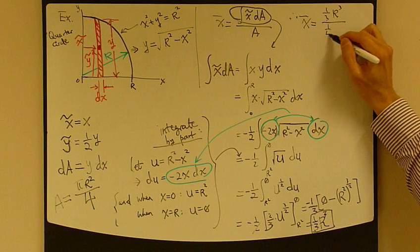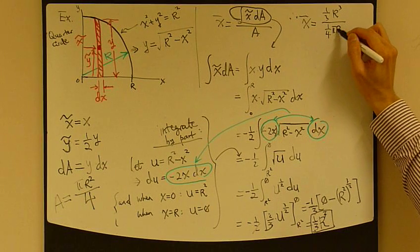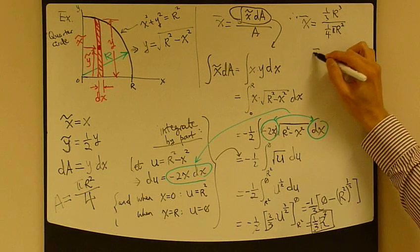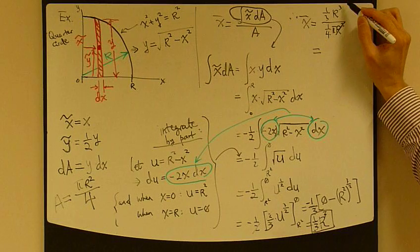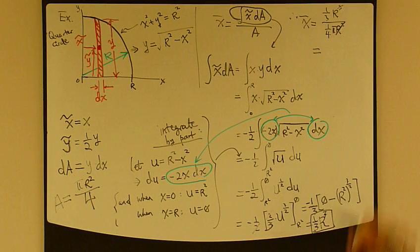So, square, okay, so look at this. The r squared disappears, power disappears, so this becomes 4 over 3r pi.